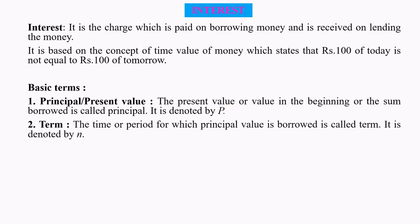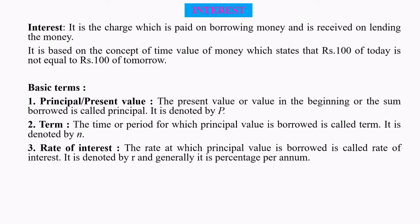Number 2: Term. The time or period for which the Principal Value is borrowed is called Term. It is denoted in years. Number 3: Rate of Interest. The rate at which the Principal Value is borrowed is called Rate of Interest. It is denoted by R and generally it is percentage per annum.